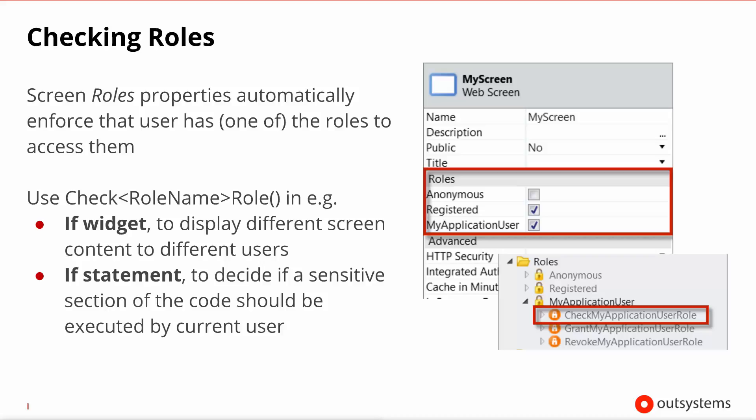In this example, if an anonymous user tries to navigate to your screen, they will be pushed to the login screen because a security exception will have been thrown. You won't need to write any other code other than ticking these role checkboxes. In code, you can use the check role function in an if widget, showing two sections of the screen depending on whether the user has the role, or in an if statement to decide which execution path to take.